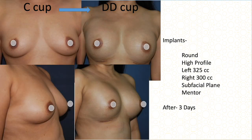Another C cup with good fatty tissue and only grade one ptosis due to the size difference between the sides. I used 325 cc and 300 cc placed in front of the muscle — sub-fascially — and that's the result after three days, from C cup to double D cup.